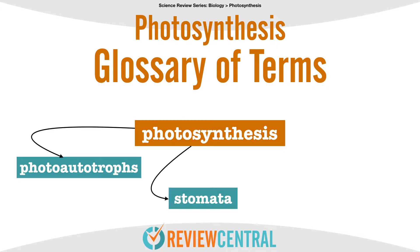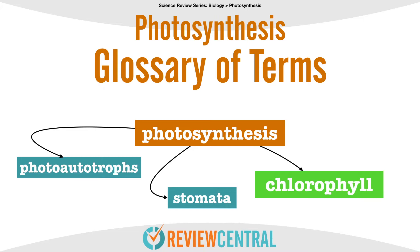There's also stomata. Stomata is a pore found in the epidermis of leaves, stems, and other organs, that facilitates gas exchange. And let's not forget about chlorophyll, the green pigment found in the leaves of plants. Chlorophyll is essential in photosynthesis, allowing plants to absorb energy from light.